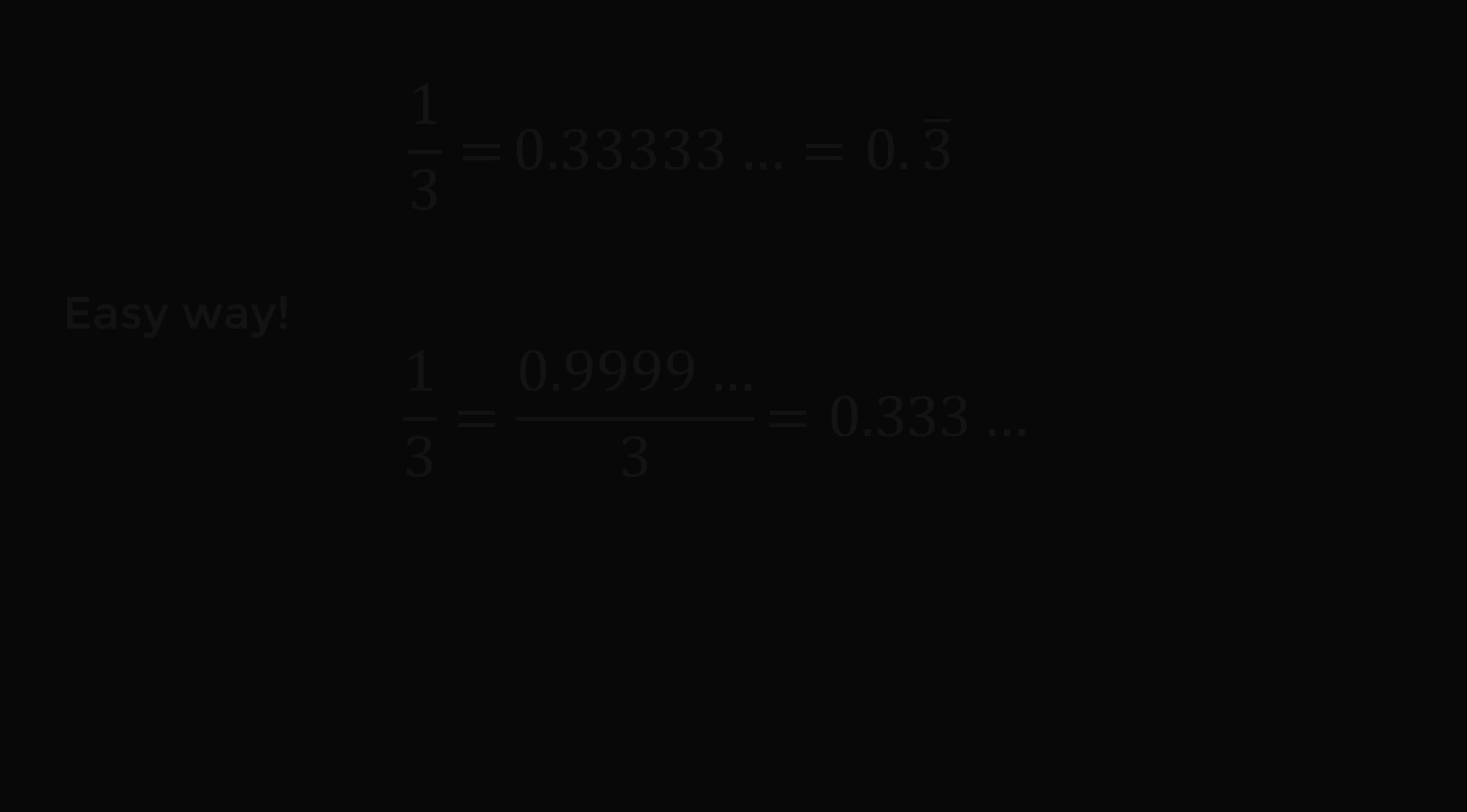Let's see how this trick can help to solve other problems. Let's do 1 over 11. Now 1 is equal to 0.9 repeating. And we remember that 11 times 9 or 11 times 09 is equal to 99. So we can represent 0.9 repeating as 0.99 repeating. Then 99 divided by 11 is equal to 09. So this will be equal to 0.09 repeating. And that's it. 1 over 11 is equal to 0.09 repeating.